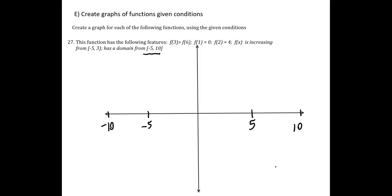It says f of 3 needs to be greater than f of 6, so 1, 2, 3, let's just put a point that's bigger than 6. f of 1 equals 0, so that means right here we're going to have a point. f of 2 equals 4, so here at 2 we'll be at 4.